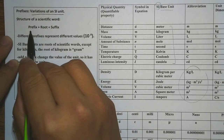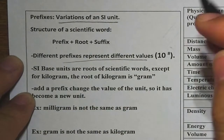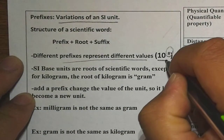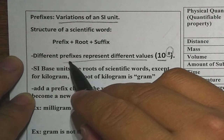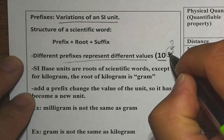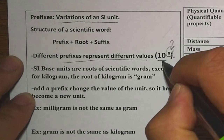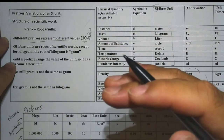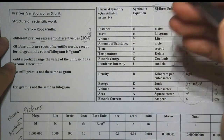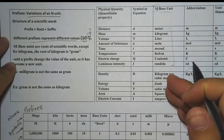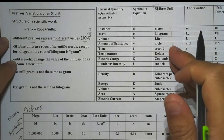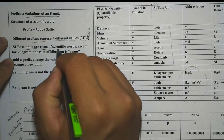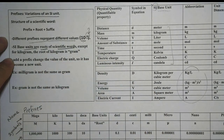Different prefixes represent different values expressed as an exponent with the base of 10. So different prefixes represent different values of that exponent, but the base of 10 remains the same. Before we look at examples, one thing you need to realize by looking at the pattern of the base units is that the base units are basically the roots of scientific words, except for kilogram.